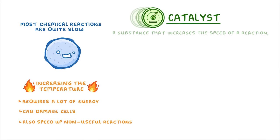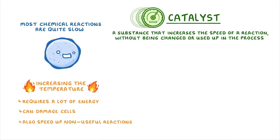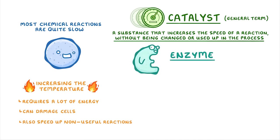We can define a catalyst as a substance that increases the speed of a chemical reaction without being changed or used up in the process. This last part of the definition is really important, because it means that catalysts can be used over and over again to catalyze multiple reactions without being used up. The word catalyst is a general term you might see in chemistry as well, but an enzyme is a particular type of catalyst that's made by living organisms, and so we sometimes call them biological catalysts.